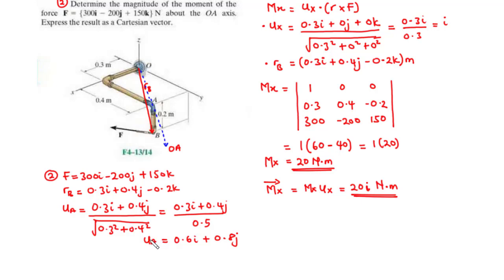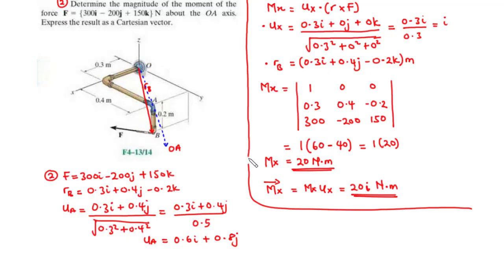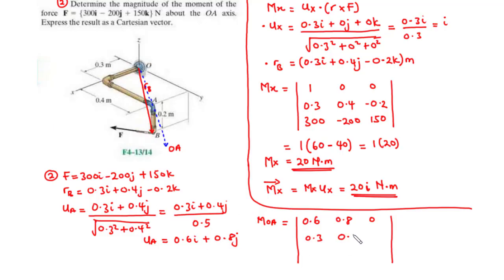Having UA, RB, and F, we find the moment about the OA axis. We construct the 3x3 determinant: first row (UA): 0.6, 0.8, 0 (no K component). Second row (RB): 0.3, 0.4, negative 0.2. Third row (F): 300, negative 200, 150.